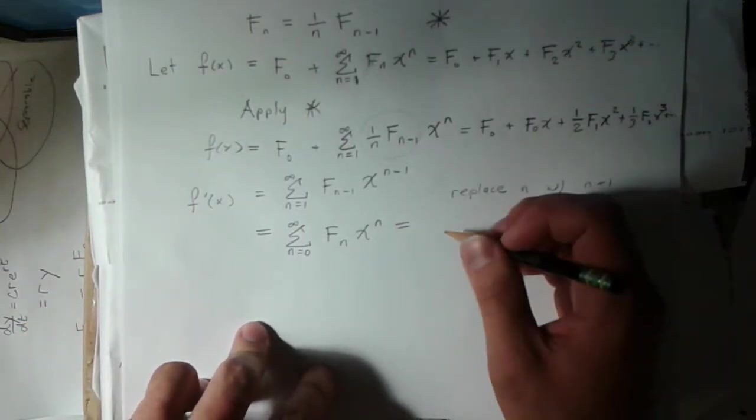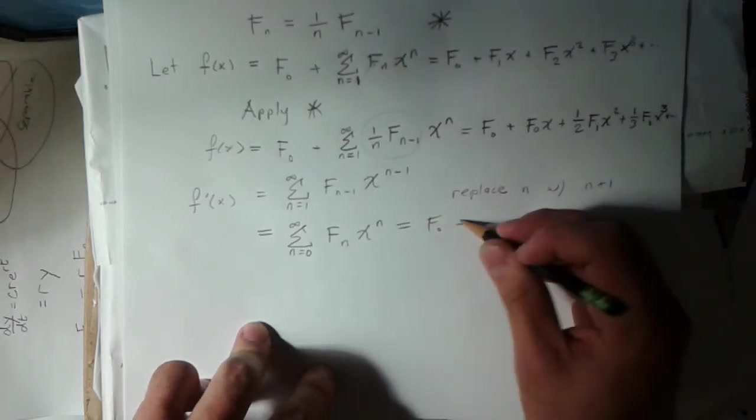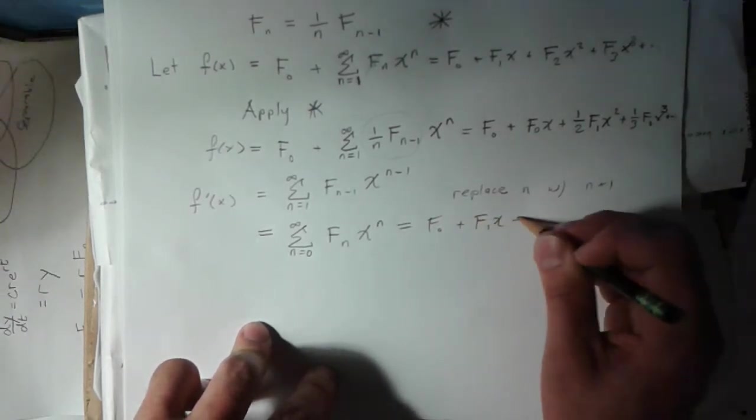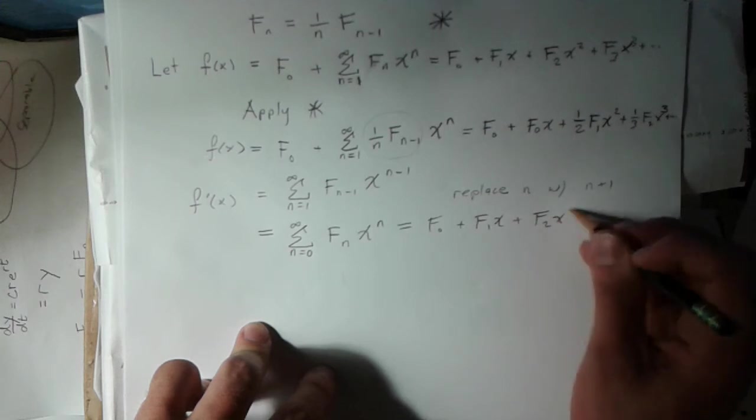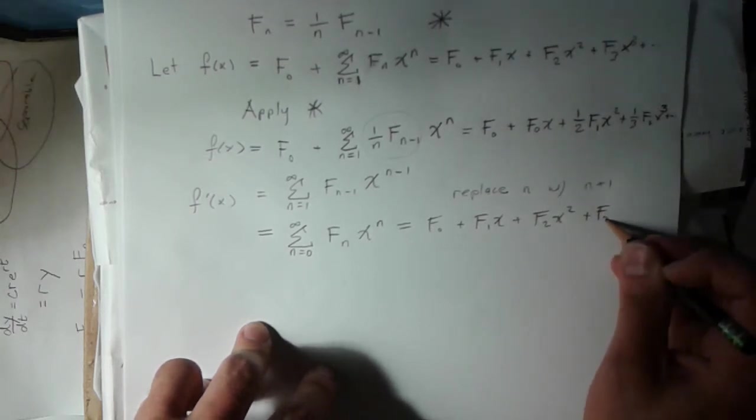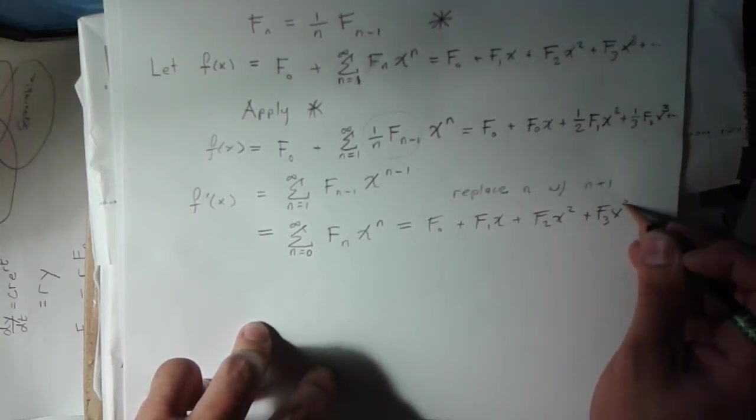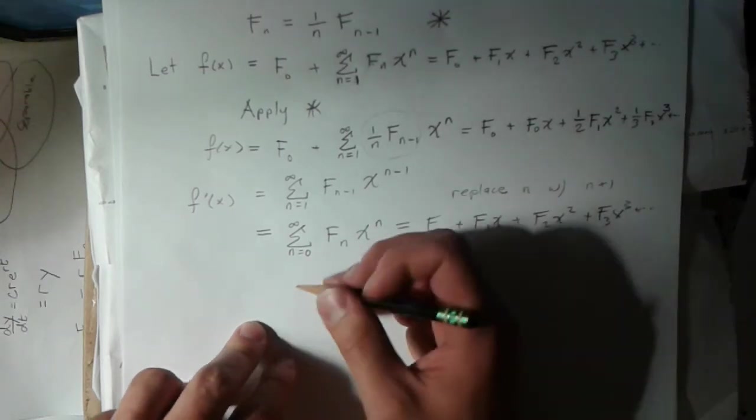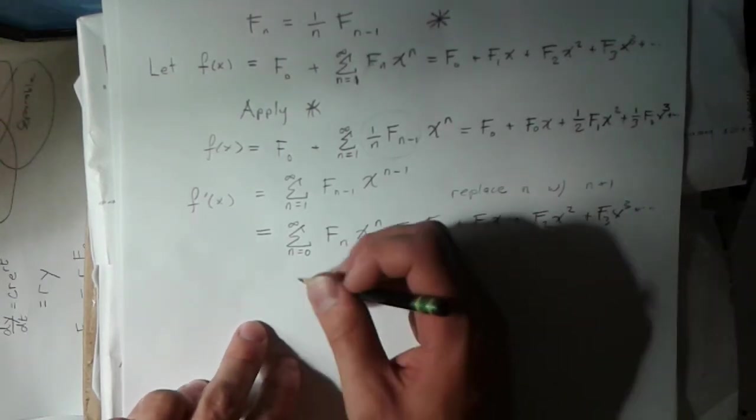If you wrote it out, this is f0 plus f1 x plus f2 x squared plus f3 x cubed. So this is what we have. This is equal to f of x.